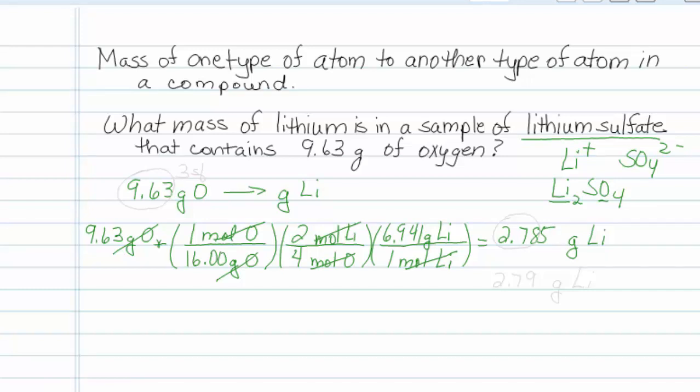Now, one last thing. This starts out with 3 sig figs, and it's a multiplication. The rest of these numbers are considered exact numbers and don't affect the number of sig figs. So we need to report our answer to 3 sig figs, and we'll remember to round up. So 2.79 grams of lithium.